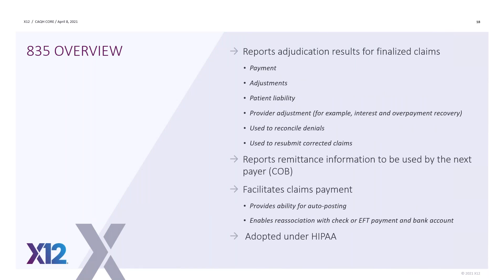The 835's main purpose is to report the adjudication results for finalized claims — that means what's the payment, what are all the adjustments, what is the patient liability, what are different provider level adjustments such as interest and overpayment recovery. It's used to reconcile denials, and it can be used to resubmit corrected claims. It must be used to generate the next claim for COB. It facilitates claim payments by enabling auto posting and enables the reassociation of the check or EFT payment to the bank account. The 835 has been adopted under HIPAA.